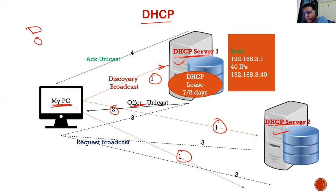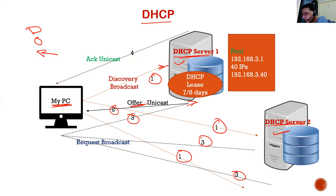The third message is the Request, sent from my PC. I send a request to Server 1 saying I accept your offer. However, this request goes out as a broadcast, so it also reaches the other server. This tells Server 2: I am already getting an offer from someone else, so you can come out of the picture. This avoids duplicate address assignment.